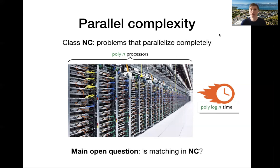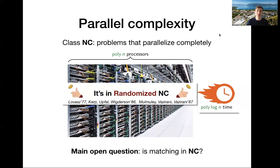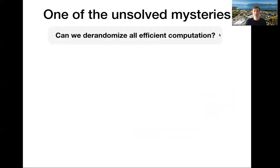And one of the main open questions here is whether the matching problem is in NC. And the reason that we think of this as a very interesting question, one of the reasons is it's known to be in randomized NC since the seventies and eighties. So this means that if I allow my processors to flip random coins, then I can solve the perfect matching problem in polylogarithmic time on polynomially many processors.